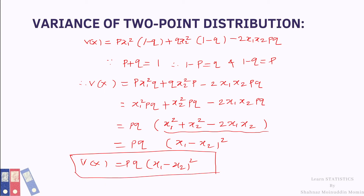In this lecture we learned what is two-point distribution and its probability mass function. We also drew the graph of two-point distribution to see its pictorial form. Further, we calculated the mean of two-point distribution as P·X1 plus Q·X2, and the variance as P·Q·(X1 minus X2)².